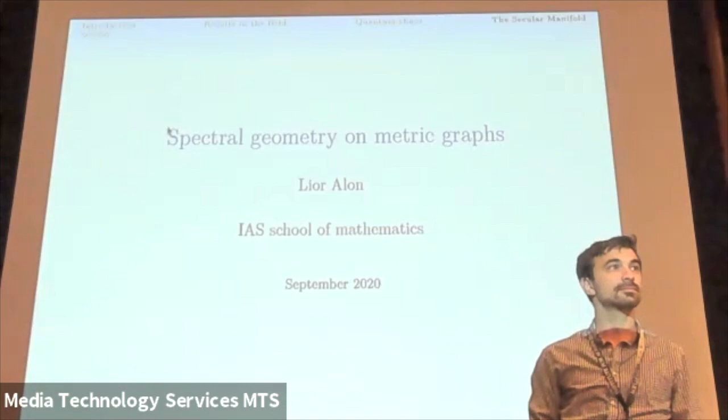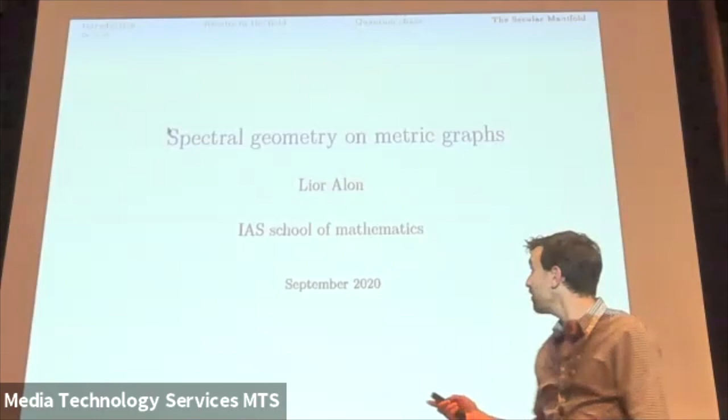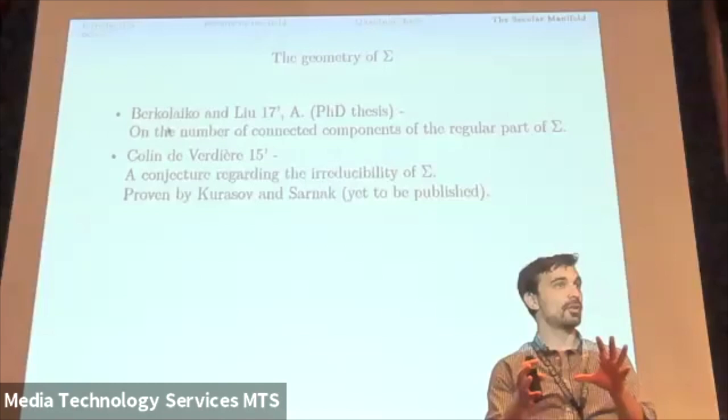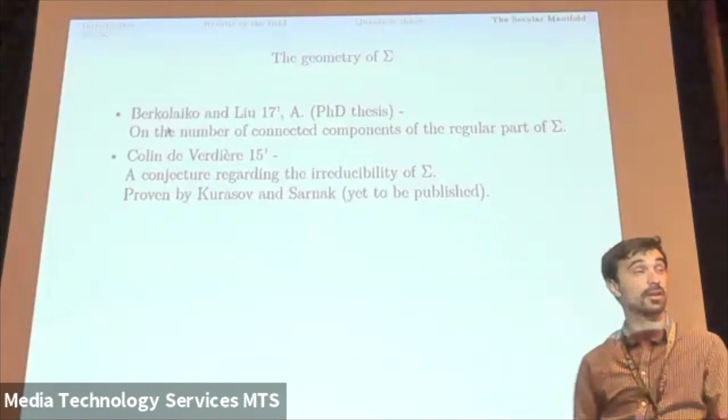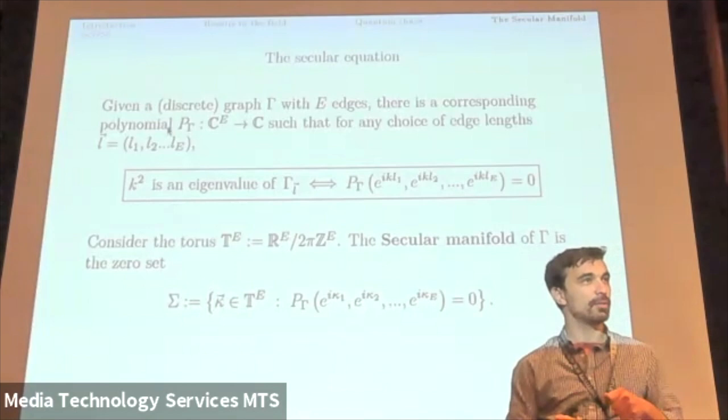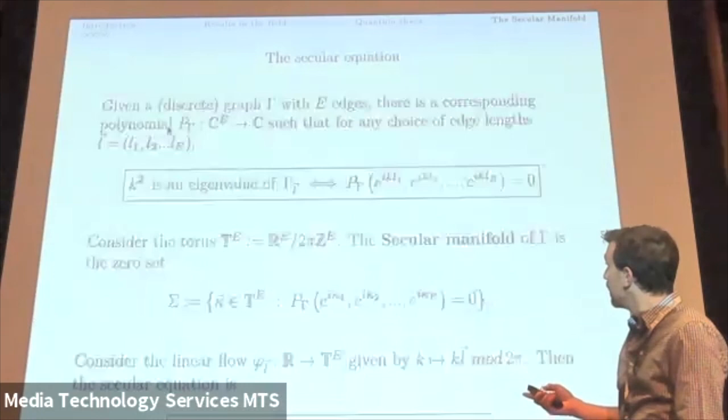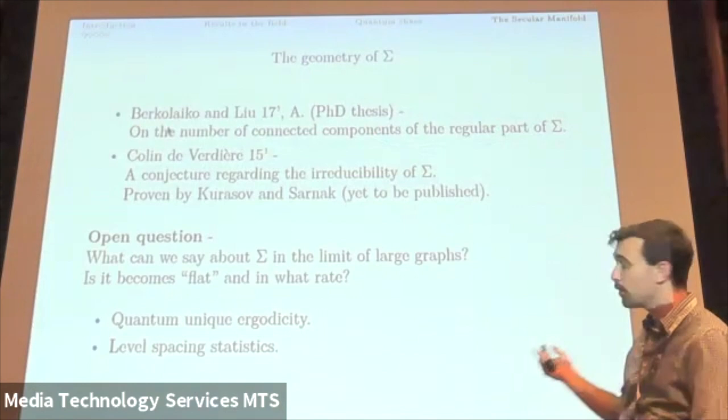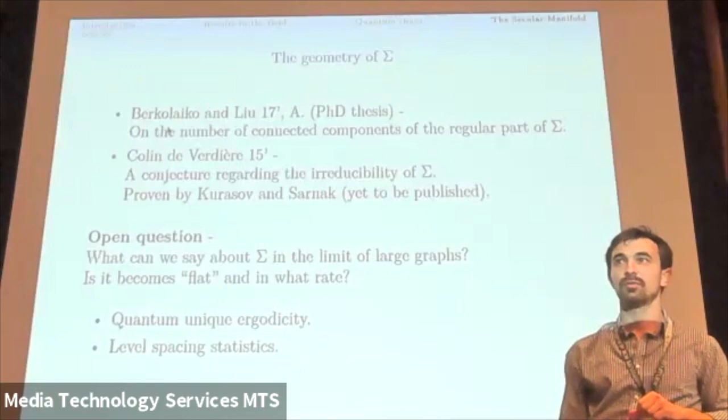What do you mean by irreducibility? That's a great question. It's actually, it's what Colin de Verdière means. And it can be interpreted in several ways. The way that Kurosov and Sarnak interpreted it was the irreducibility of this polynomial. But Colin de Verdière didn't write explicitly what do you mean by irreducibility. And that's quite related to the question of number of connected components, but not exactly. These are complementary questions.